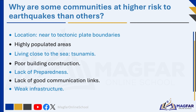Communities with poor rescue plans can wait days before rescue teams reach the area to help survivors. Lack of good communication links: settlements that do not have good communication links, such as remote rural areas, are in danger of not being able to call for help. Infrastructure: communities with weak infrastructure like roads, bridges, and power lines are more susceptible to damage and disruption following an earthquake.